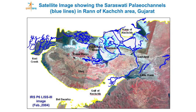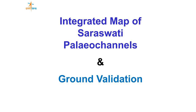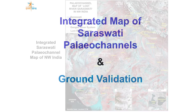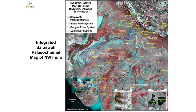Similarly, we delineated paleochannels in the Rann of Kutch area. The problem there is that it is a salty marshy land with white colored terrain. Still, after processing bit by bit, we can find traces of paleo channel signatures, and we have delineated them up to the Gulf of Kutch. Based on all data from Rajasthan, Punjab, Haryana, and Gujarat, we have integrated it to form an integrated paleochannel map. This is the map which many researchers are using — even Dr. Bakshi has used it in his books. We are thankful, but the source should always be mentioned.